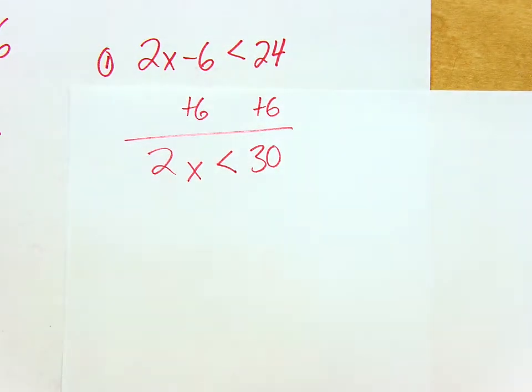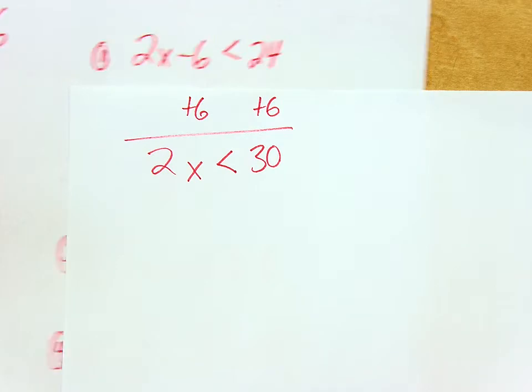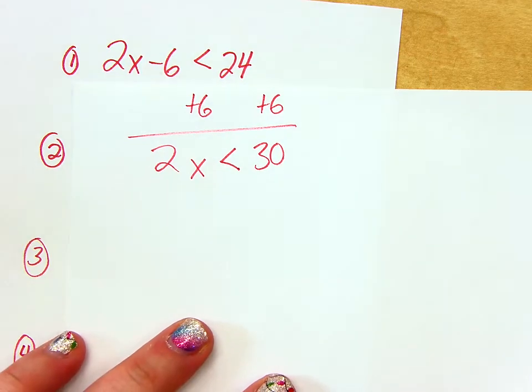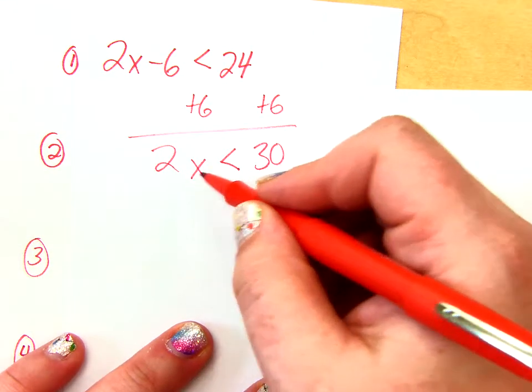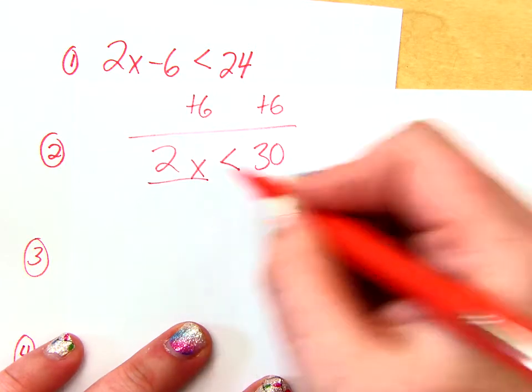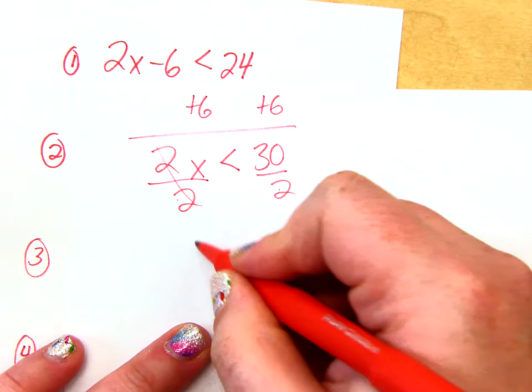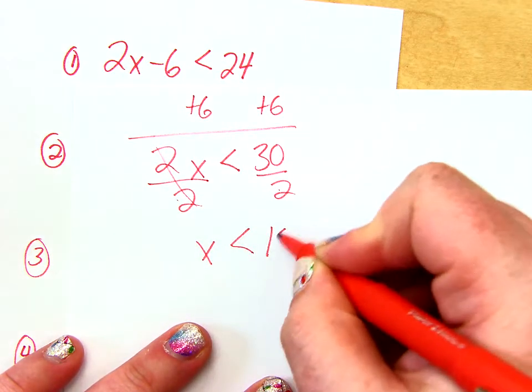Okay, now what would I do, Ethan? Divide, what number goes down here? Yes, divide both sides by 2. So now I get x is less than 15.